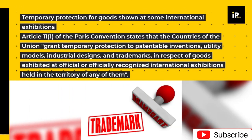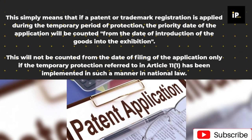Article 11 of the Paris Convention states that the countries of the Union grant temporary protection to patentable inventions, utility models, industrial designs, and trademarks, in respect of goods exhibited at official or officially recognized international exhibitions held in the territory of any of them. This means that if a patent or trademark registration is applied during the temporary period of protection, the priority date of the application will be counted from the date of introduction of the goods into the exhibition, and not from the date of filing, only if the temporary protection referred to in Article 11 has been implemented in national law.